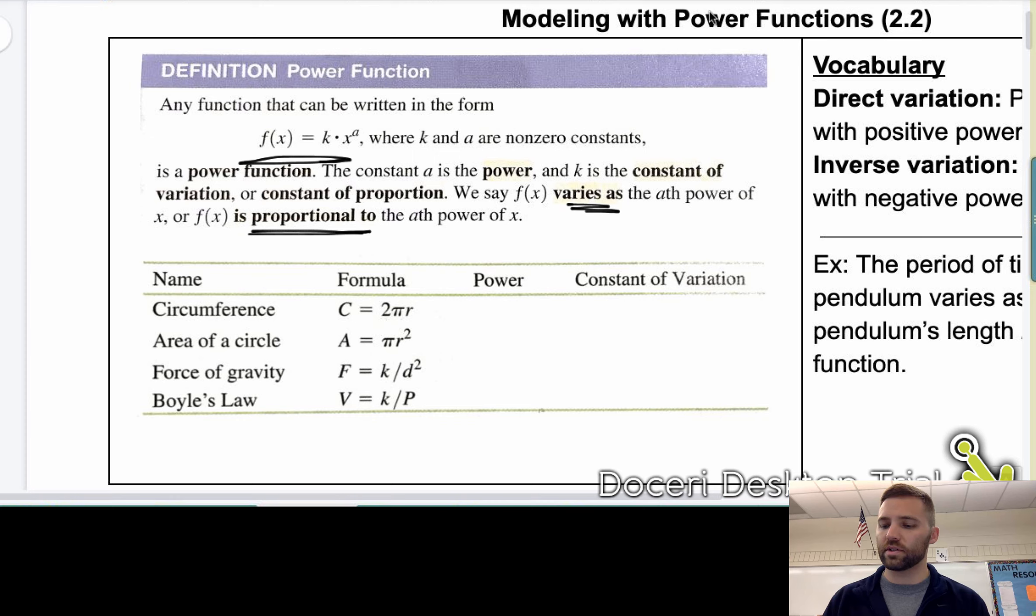So let's do some examples here. I've got some formulas, and I want to identify in each one of the formulas what is the power and what is the constant of variation. So here's the circumference formula, C equals 2πr. The power here is 1, because that r is to the 1 power, although we never write the 1. The power is 1, and the constant of variation is 2π. That's the number out in front.